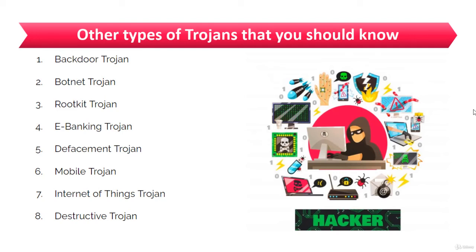The next type is the proxy server Trojan. As the name suggests, a Trojan proxy is usually a standalone application that allows remote attackers to use the victim's computer as a proxy to connect to the internet. For example, if Bob has attacked Alice's computer via a Trojan and placed a proxy, Bob can access the internet via Alice's computer, hiding his real identity behind Alice's.